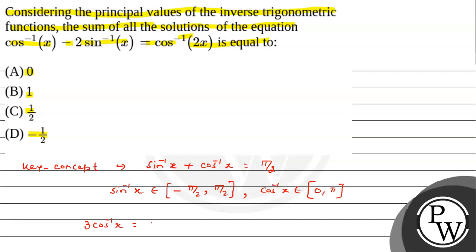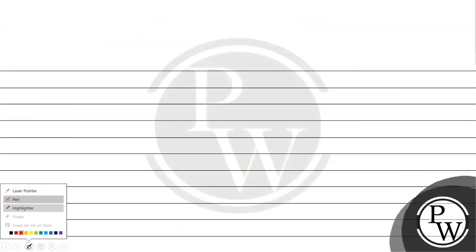3cos⁻¹(x) = cos⁻¹(4x³ - 3x). Using these key concepts, we are going to start to solve the problem.